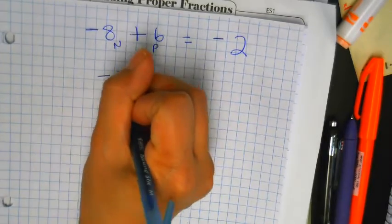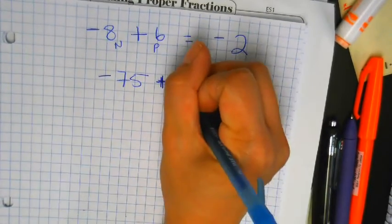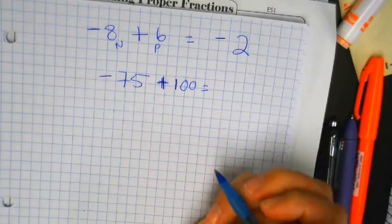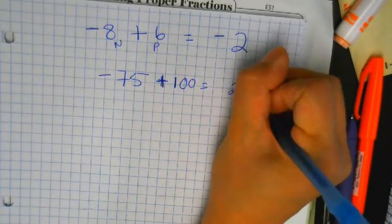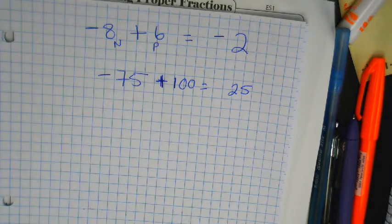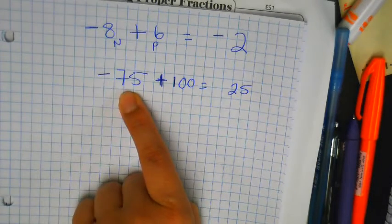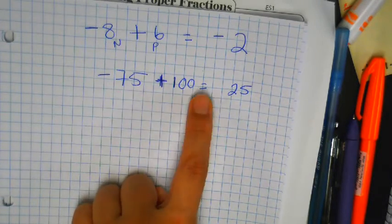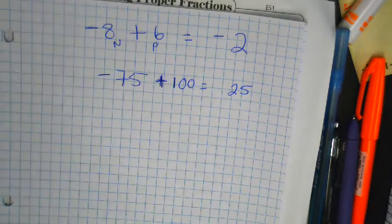Negative 75 plus 100 — positive or negative? Positive. Because there's 100 positives and there's only 75 negatives. Even though that's a lot, 100 beats it. It's like a tug of war: you got 100 positive players and 75 negative players — the positive side's going to win.